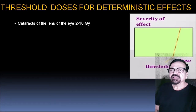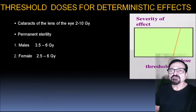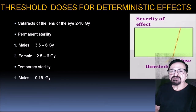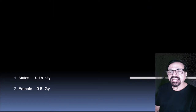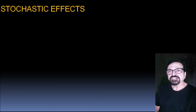Temporary sterility can occur in males at 0.15 Gray and in females at 0.6 Gray. We must know these thresholds from a radiation protection perspective — after measuring received dose, appropriate steps must be taken to prevent temporary damage from becoming permanent.